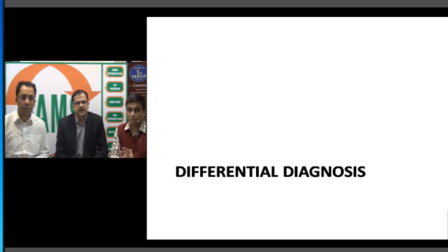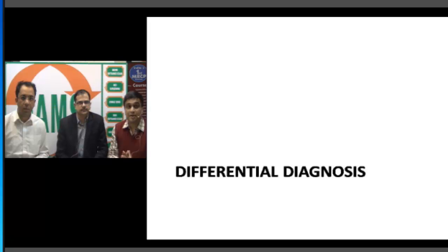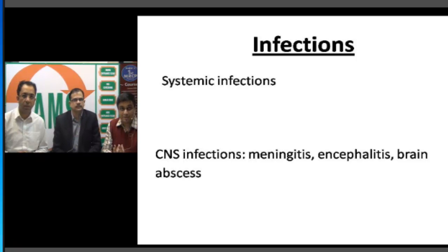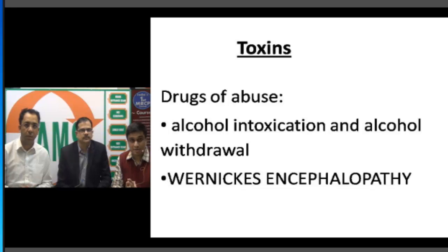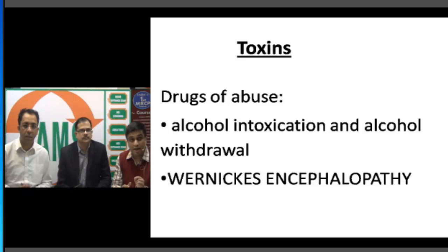Looking at the differential diagnoses from the history and examination: the first could be infections — systemic infections spreading from an idle source, or central nervous system infections such as meningitis, encephalitis, or brain abscess. Second, drugs of abuse — since the patient was alcoholic, this may be alcohol intoxication or withdrawal, and may precipitate a vitamin B1 deficiency leading to an acute problem known as Wernicke's encephalopathy.